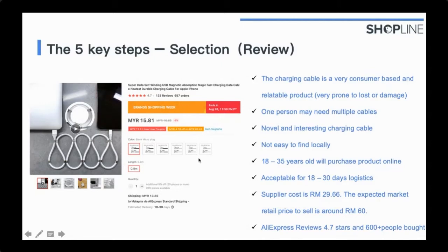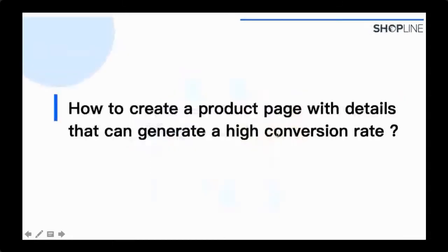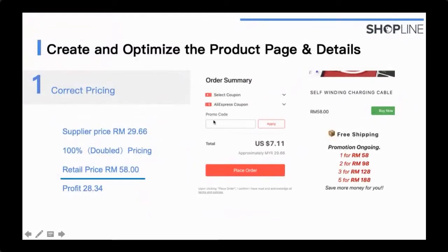Step 2 is creating a high-quality, high-conversion product detail page. The first consideration is pricing — set a suitable price, usually one to two times the supplier price. Since advertising has a cost, the return ratio I suggest is that if you invest one ringgit, you should get two back. Try to price the product at double or a little more than double the supplier price to ensure you make a profit even after advertising spend.